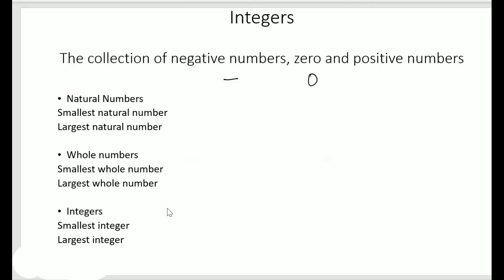Natural numbers start from one: one, two, three, four, and so on. The smallest natural number is one; there is no largest natural number. For whole numbers starting from zero, the smallest whole number is zero; there is no largest whole number.